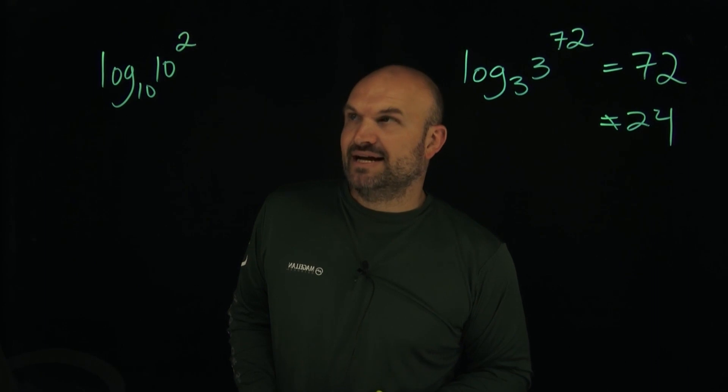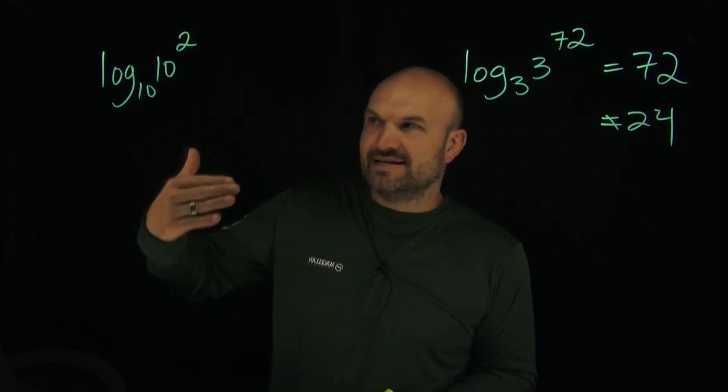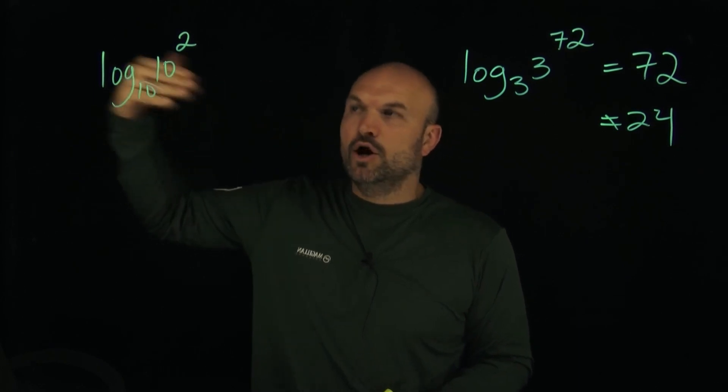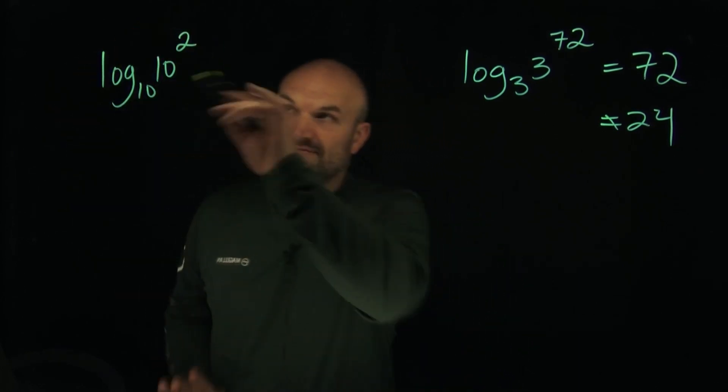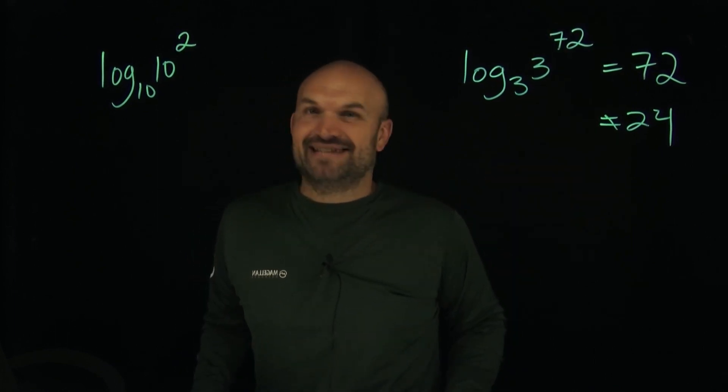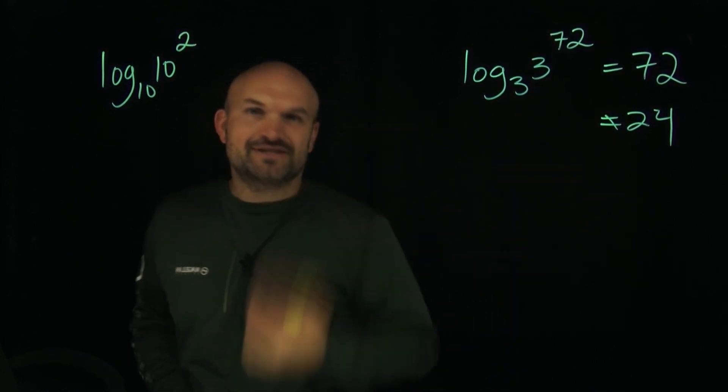So in this case, I have logarithm base 10 of 10 squared. The nice thing is we don't need to write base 10, but I'm writing base 10 in there so you can at least see what we're doing. Now, in this case, when I have 10 raised to the second power, that's a lot easier to compute than three raised to the 72nd power, right? So 10 squared is just going to be 100.